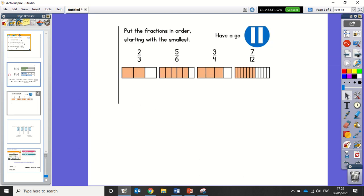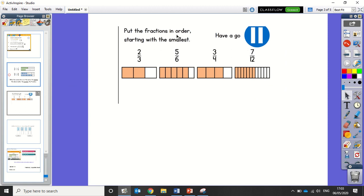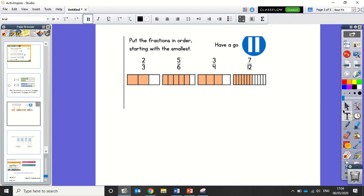Let's look at the next page. We've got to put these fractions in order, starting with the smallest. Now these don't have the same denominator. But we can give them a common denominator. And what that means is we're going to change all these so they're the same. We're going to make them all 12.